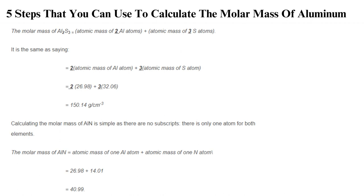2. Write down the chemical formula. After identifying the material, write down its chemical formula. The chemical symbol of aluminum nitride is AlN, whereas that of aluminum sulfide is Al2S3.